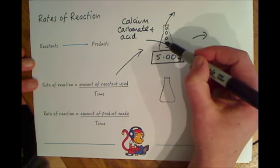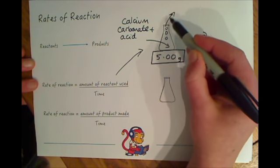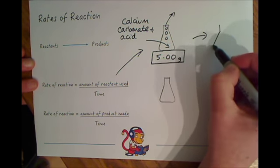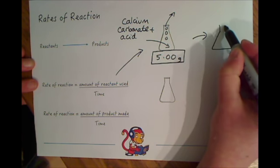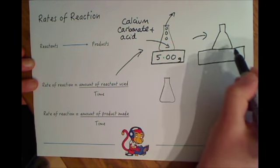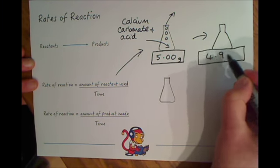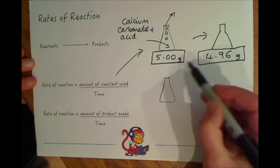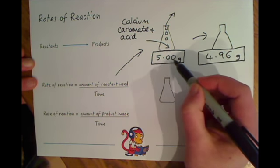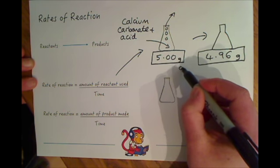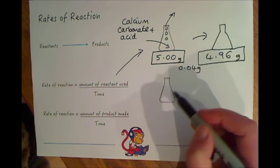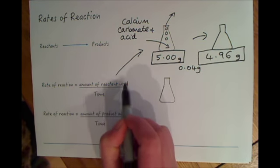Because the gas is leaving, you're actually having mass escaping out of the top of the conical flask. So what you should see over time is that the mass of the reactants decreases. If we were to weigh this again we might have 4.96 grams left in our conical flask. That shows that if we take 4.96 from 5.00, that 0.04 grams of reactants has been used up.